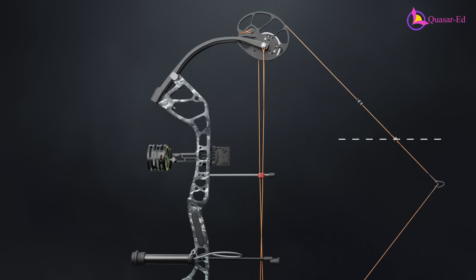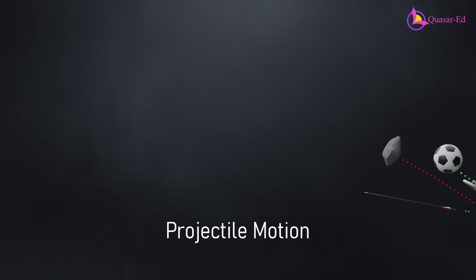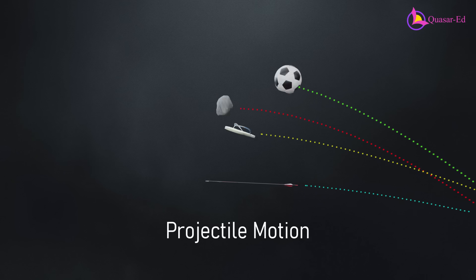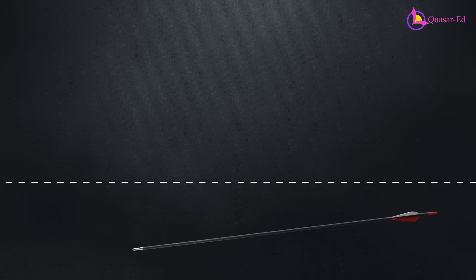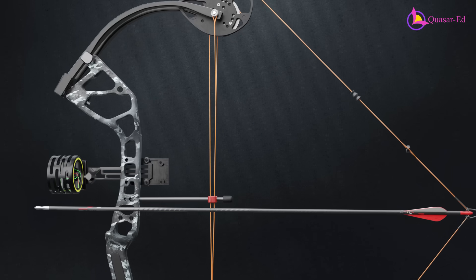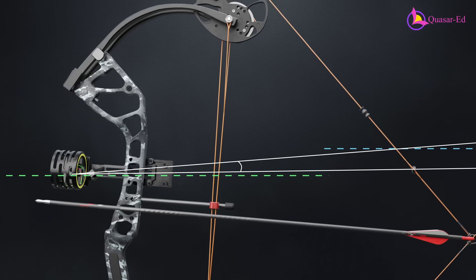For those wondering why the peep sight and sight are positioned above the arrow, even though the arrow is meant to hit the target aligned with the sight, it's due to projectile motion. Like any thrown object, an arrow follows a curved path because of gravity pulling it downward. If shot perfectly horizontal, it would land below the intended target. To compensate for this, compound bows provide a slight upward angle between the peep sight and the scope.